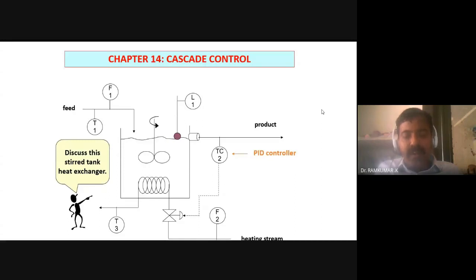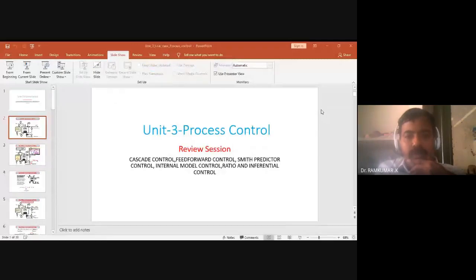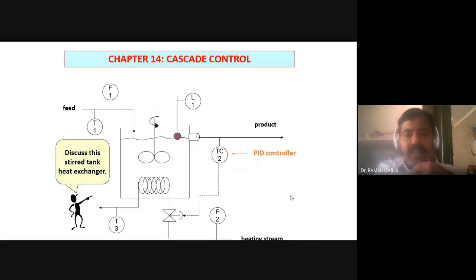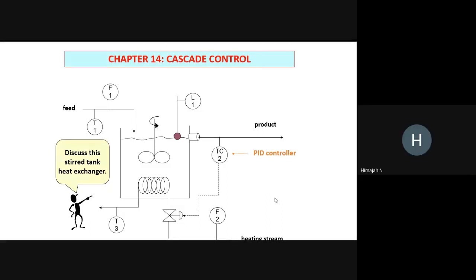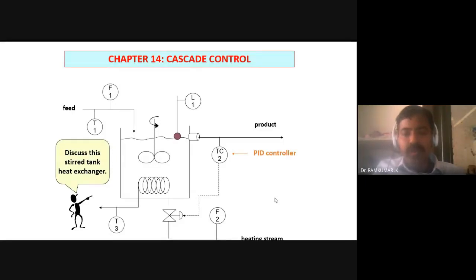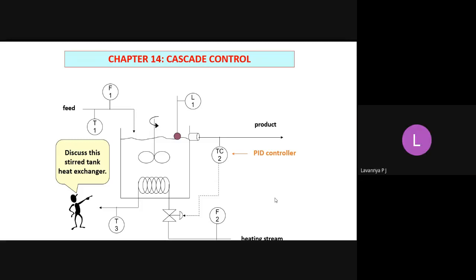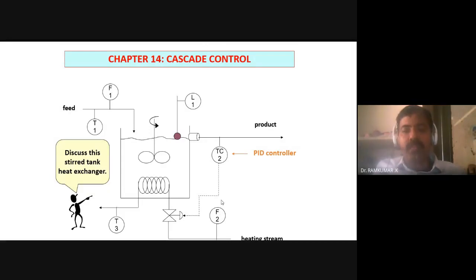So this particular slide gives you the clear picture of what exactly you need a cascade control system for. I'll start with the fundamental question. What we are controlling in this slide — can somebody tell me? We are controlling the temperature of the final end product, because you can see clearly there is a term called TC — that is from the instrumentation piping diagram. TC indicates temperature control. So we are interested in controlling the temperature of the end product.